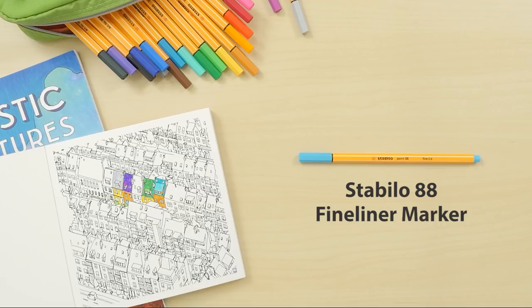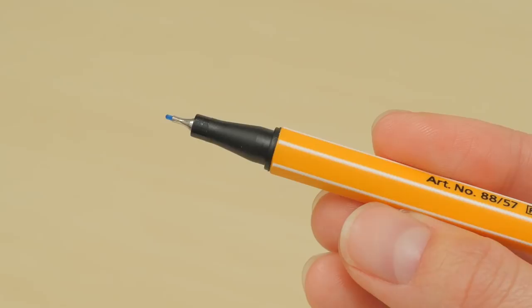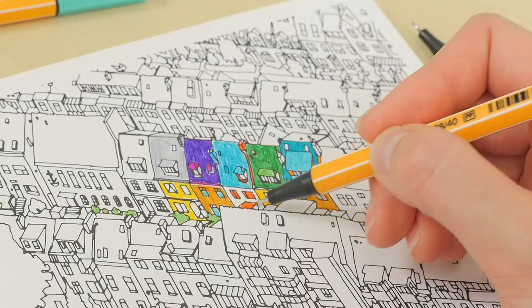The Stabilo 88 fineliner markers have tips that are encased in metal, which prevent the tips from wearing down. They lay down smooth, vibrant lines that are great for coloring.